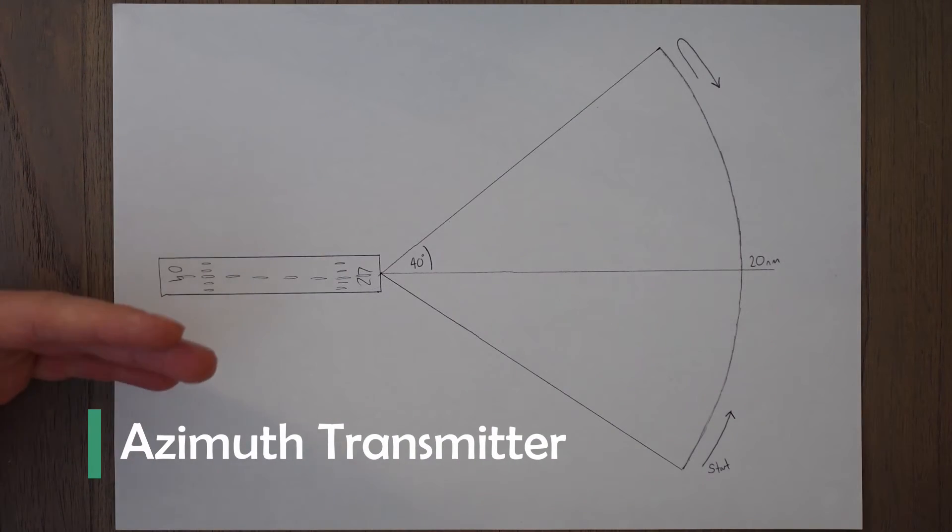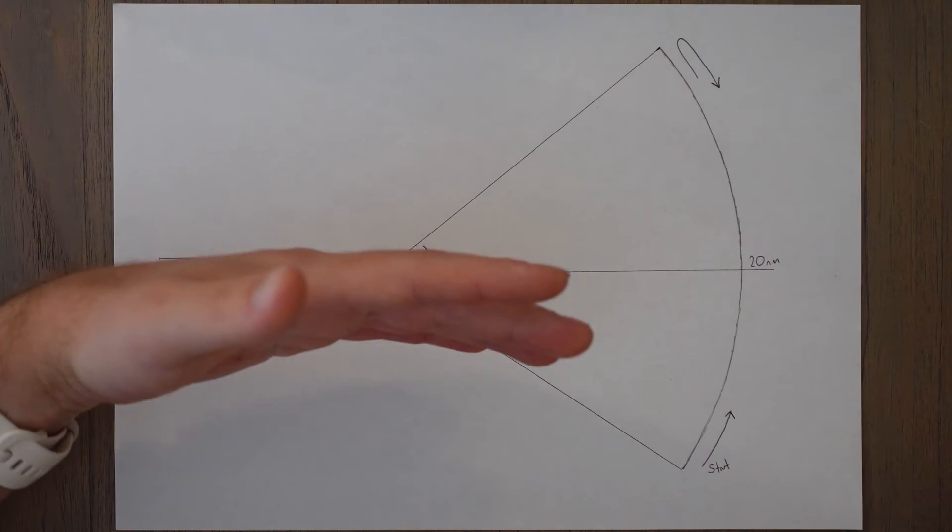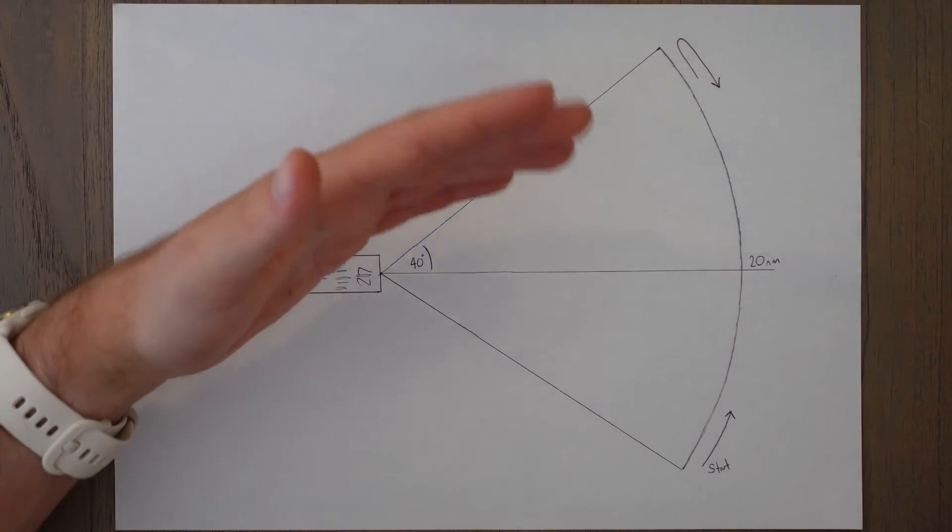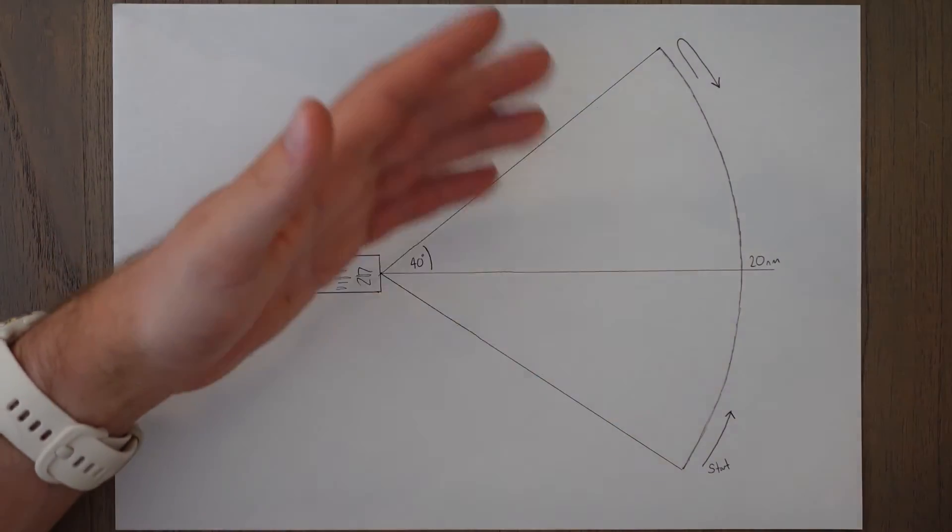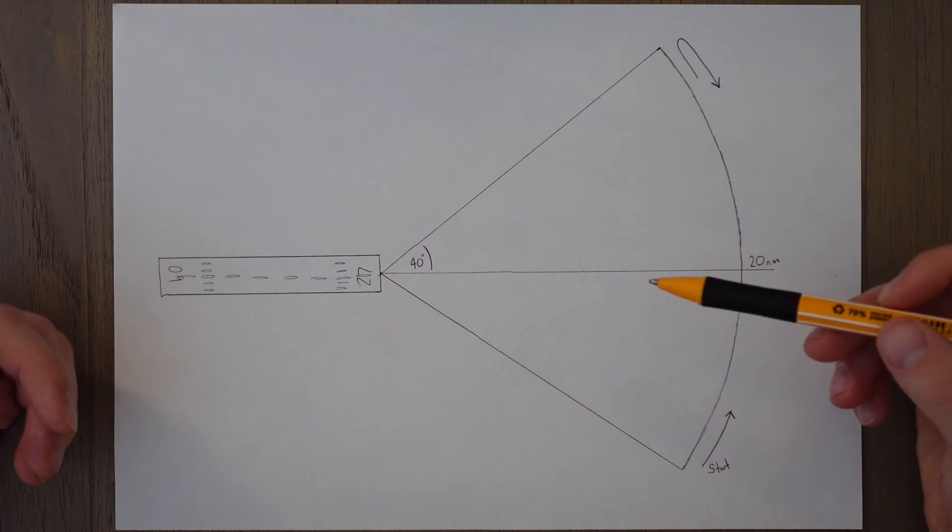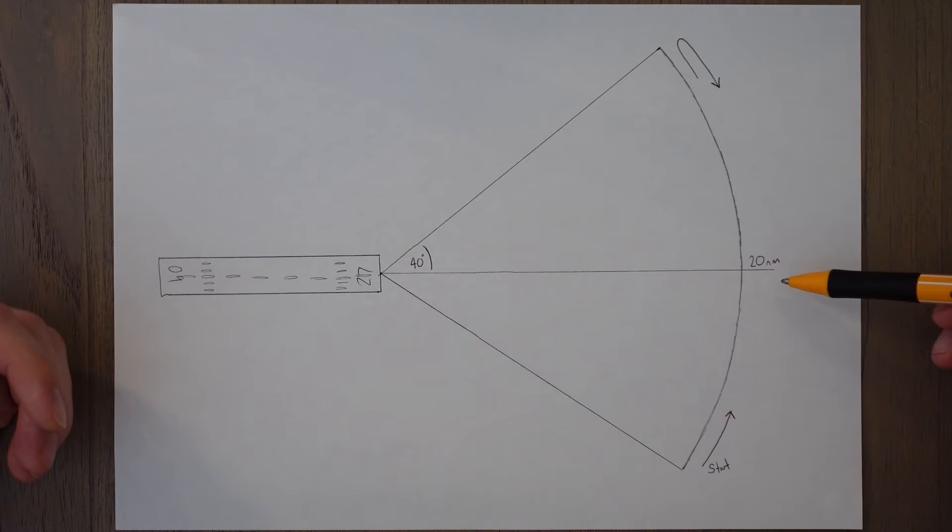The horizontal guidance is provided by a fan-shaped vertical beam that sweeps back and forth within the coverage limits in an accurately timed sequence. The coverage range is 40 degrees either side of the centerline out to 20 nautical miles.